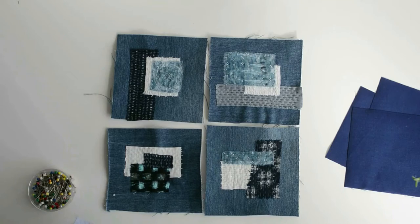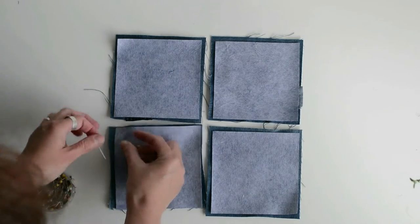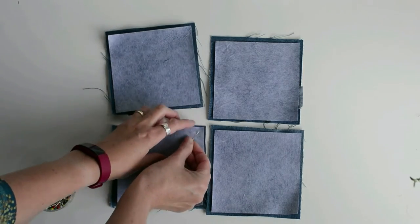Once you've finished your four coasters and your hand stitching, it's time to transform your denim pieces into coasters. You're going to cut out some lining squares that are 5 inches. They've also got fusible interfacing on them.